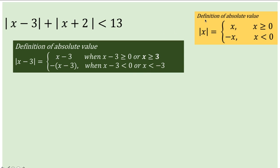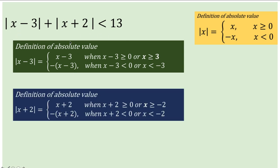This is the application of the definition of absolute value to the first absolute value x minus 3. Now applying the same definition to the second absolute value, x plus 2: the absolute value of x plus 2 equals x plus 2 when that number inside is positive, which simplifies to x greater than or equal to negative 2. The second part gives us negative of x plus 2 when that number inside is less than 0, simplifying to x less than negative 2.